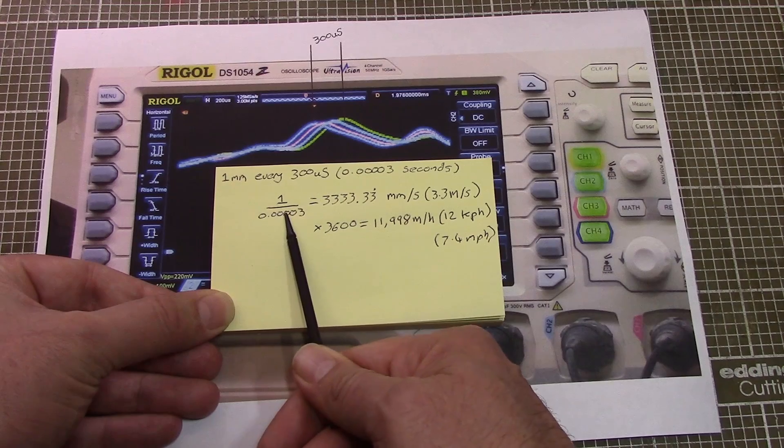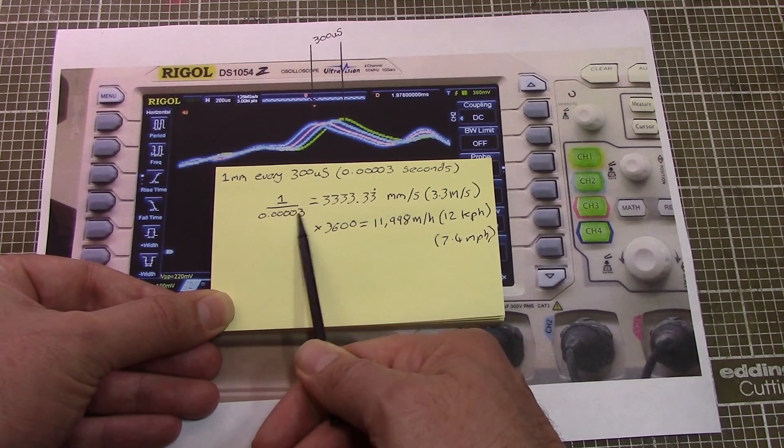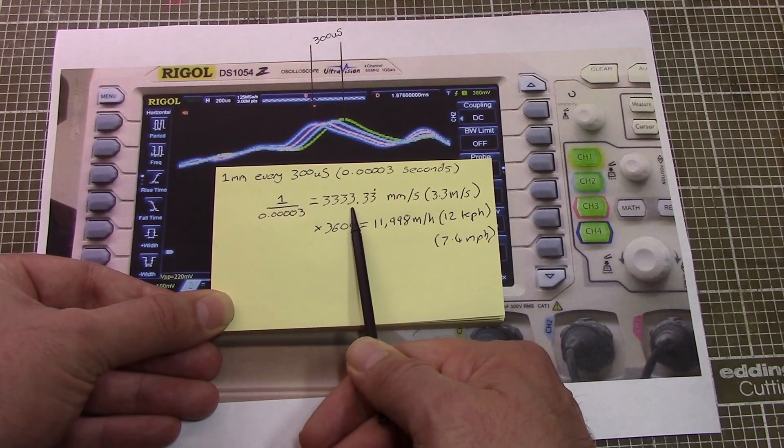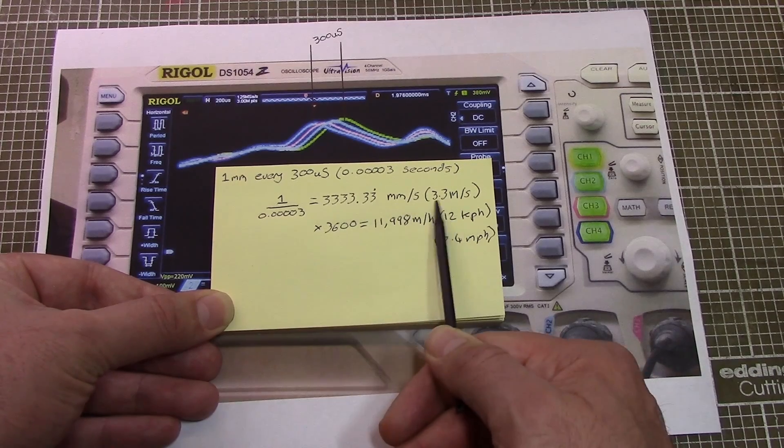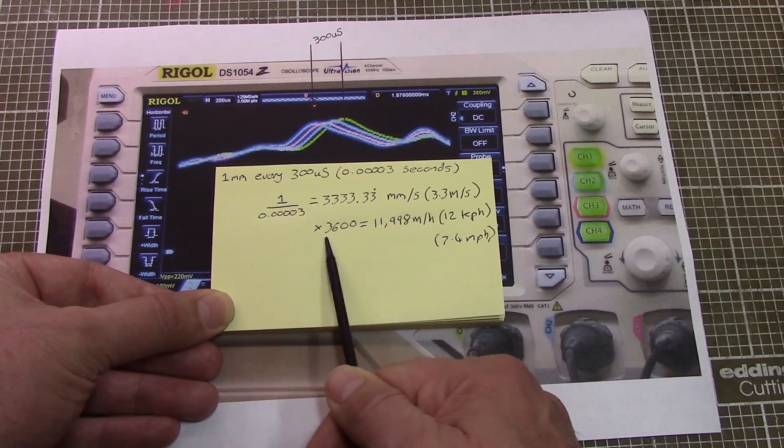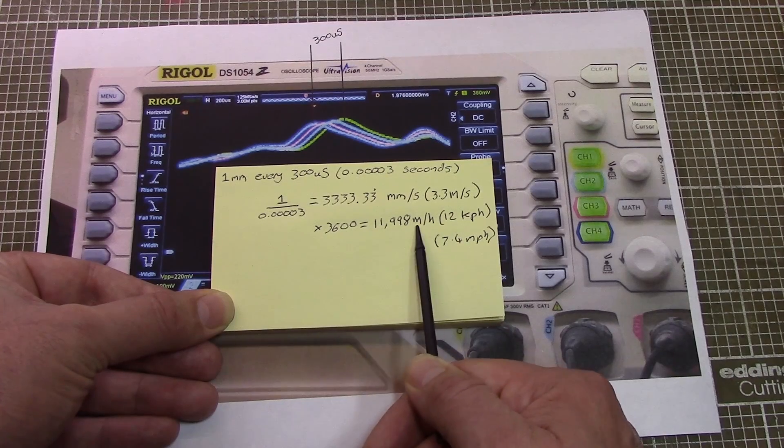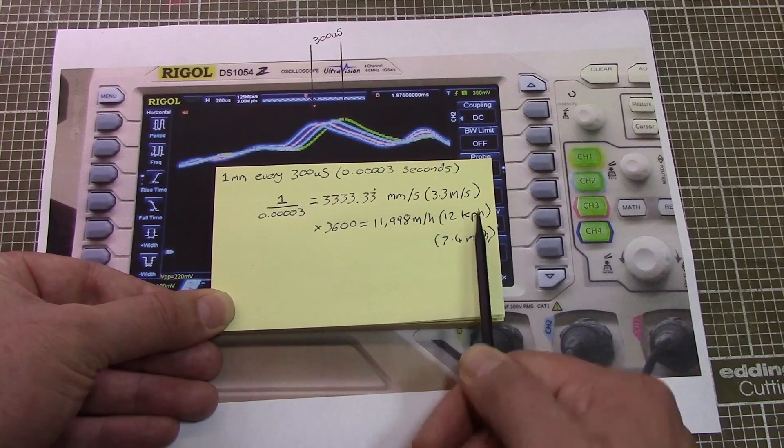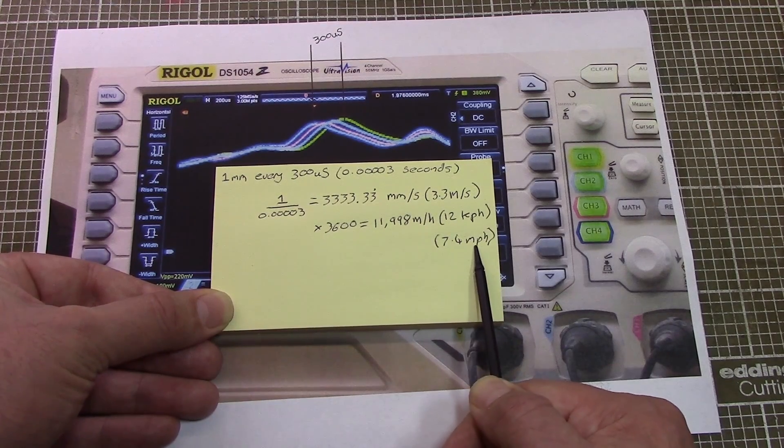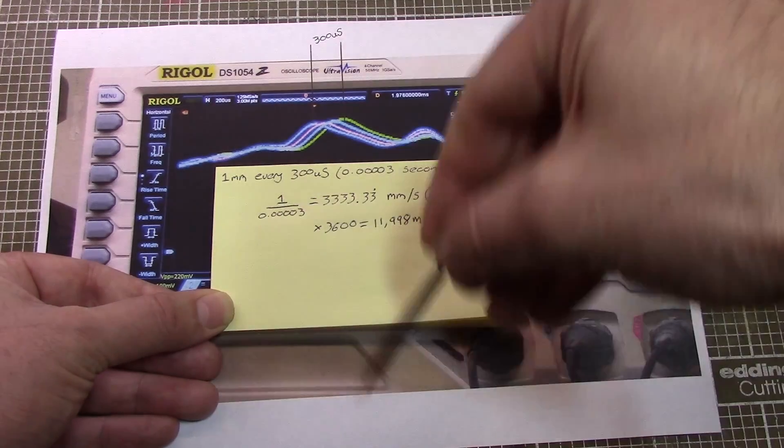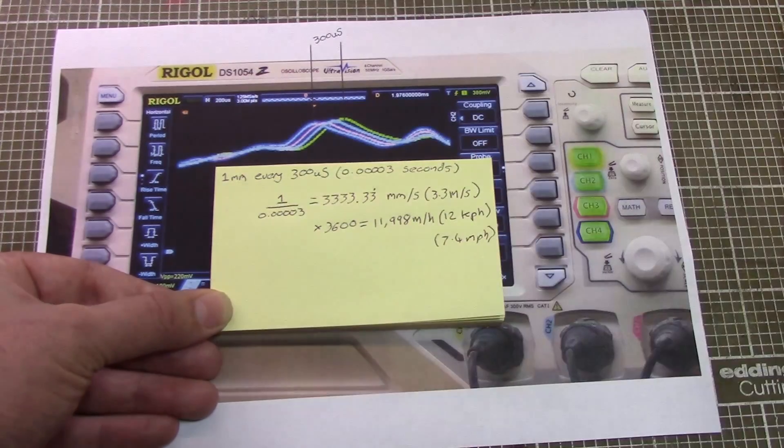Doing a quick bit of number crunching on that means we've only moved one millimeter every 300 microseconds. So per second, one divided by that, we move 3,333 millimeters per second or 3.3 meters per second. Multiply that by the number of seconds in an hour and we find we were doing just about 12 kilometers an hour or 7.4 miles an hour. And that was the speed the laser beam traveled over those diodes at.